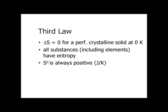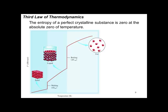The third law of thermodynamics. Delta S equals zero for a perfect crystalline solid at 0 degrees Kelvin. All substances, including elements, have entropy. So S0 is always positive in units of joules per Kelvin. The entropy of a perfect crystalline substance is zero at the absolute zero of temperature. That's the third law. This graphic shows how that's arrived at.